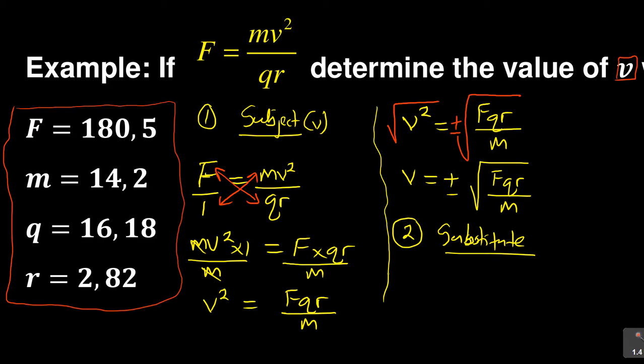You then say v = ±√... What is your F? Remember your F is 180.5. Times what is your q? Your q in this case is 16.18. Times what is your r, which is 2.82.